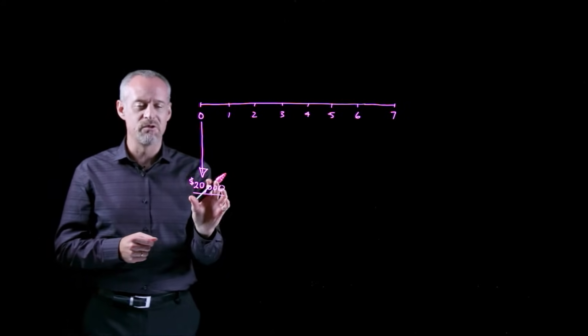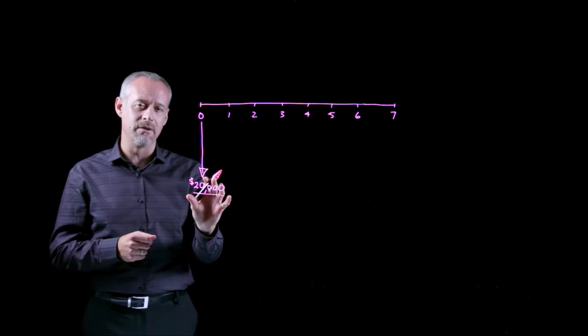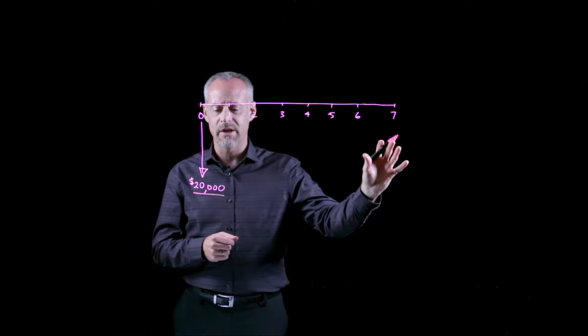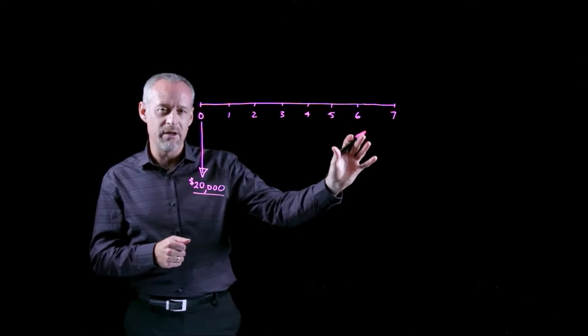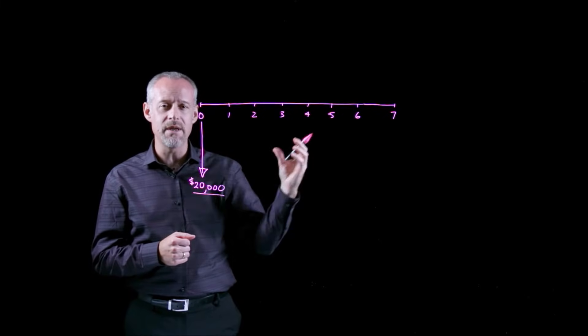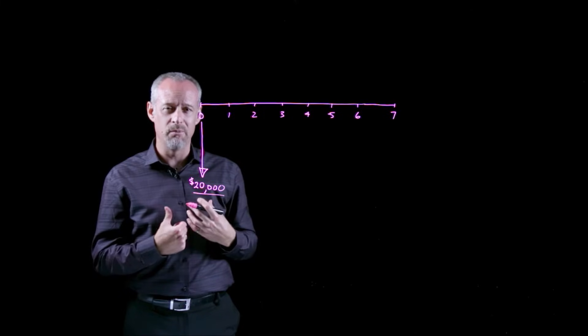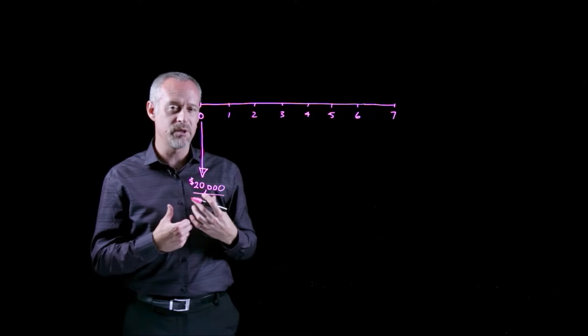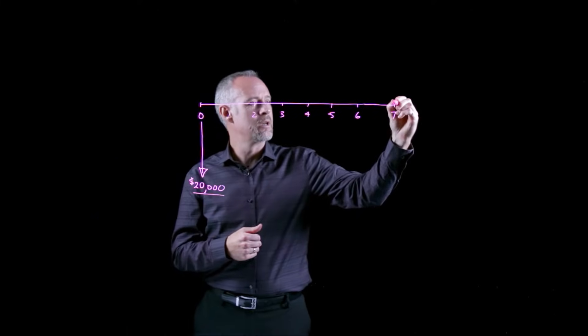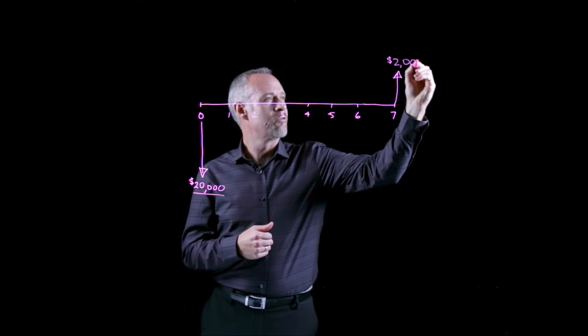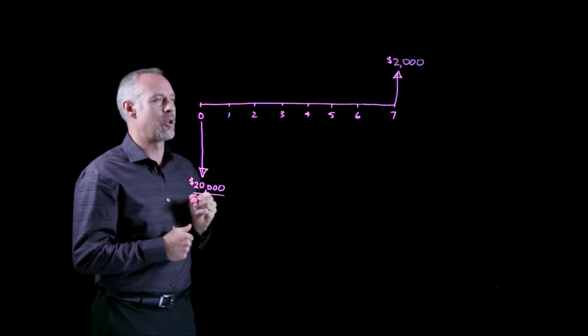So in this particular problem the salvage value occurs at the end of the useful life of the equipment. So that is at the end of seven years. But the salvage value itself is money that we receive. So when you sell your used car it's money that you can put back in your pocket. So in this particular problem we'll draw an up arrow with a value of two thousand dollars.